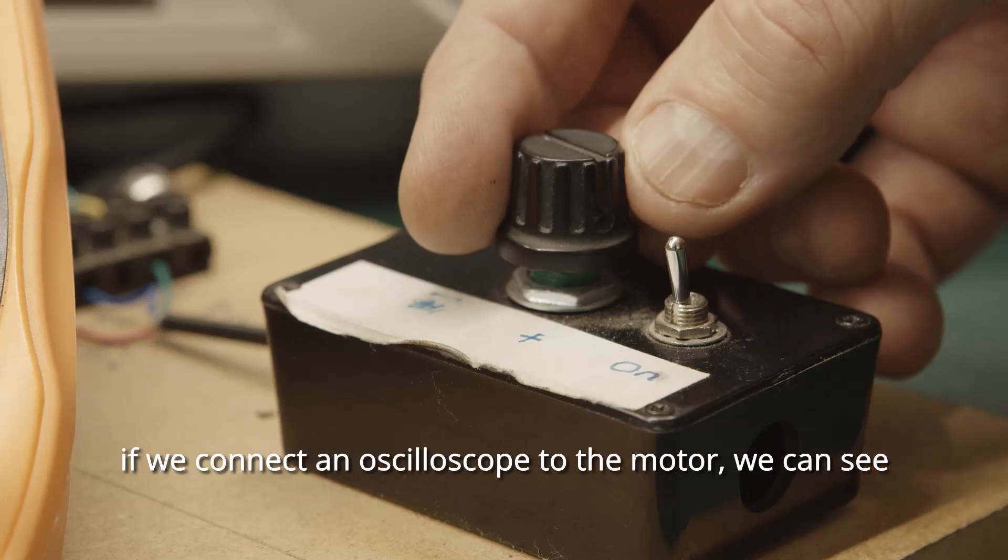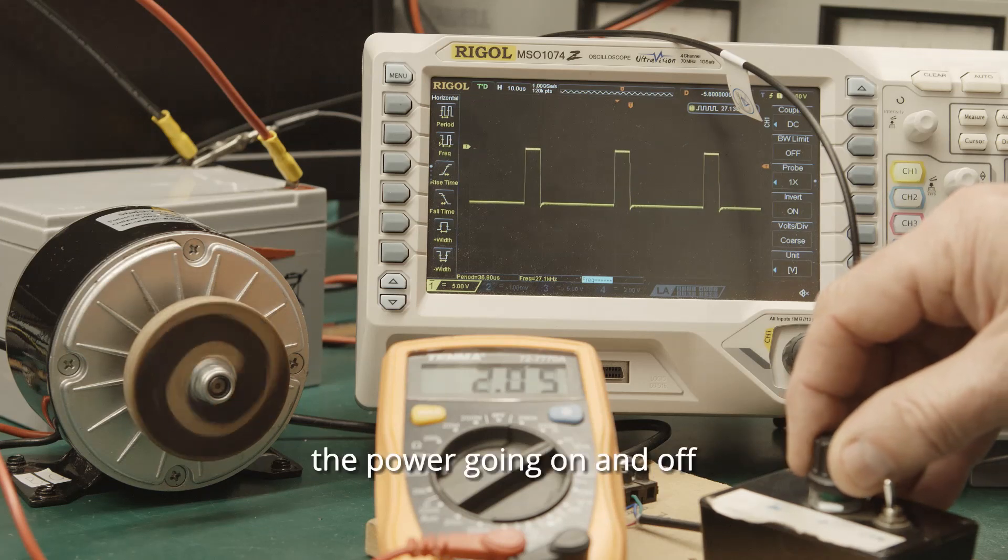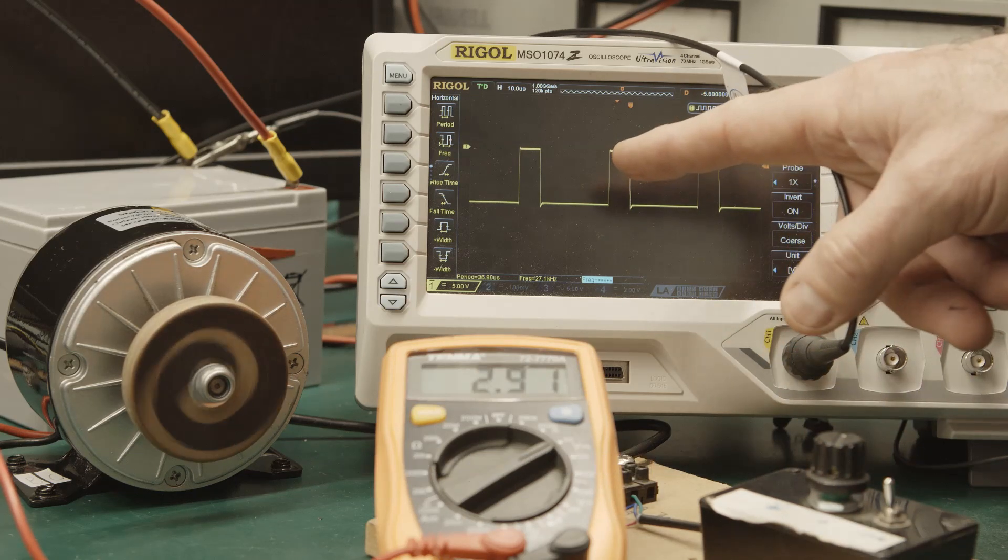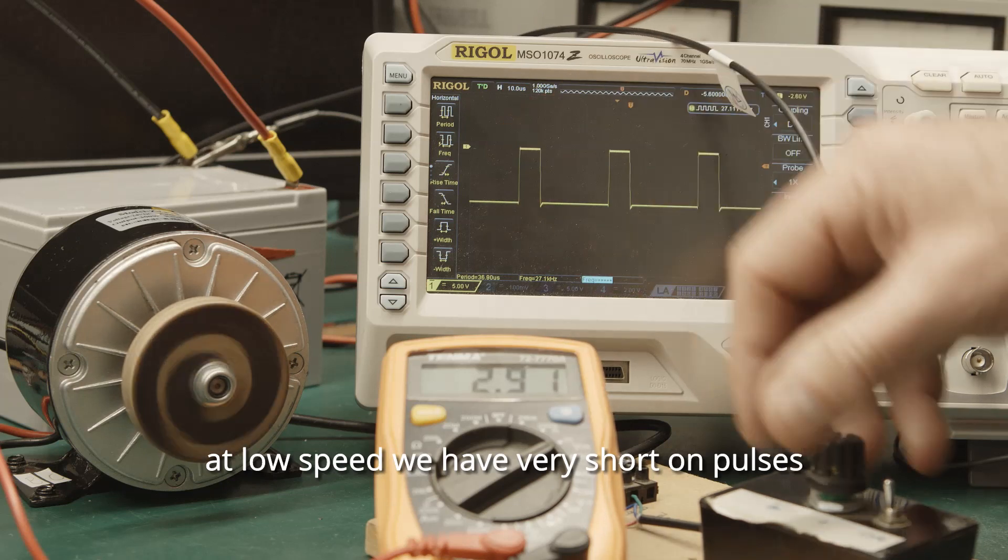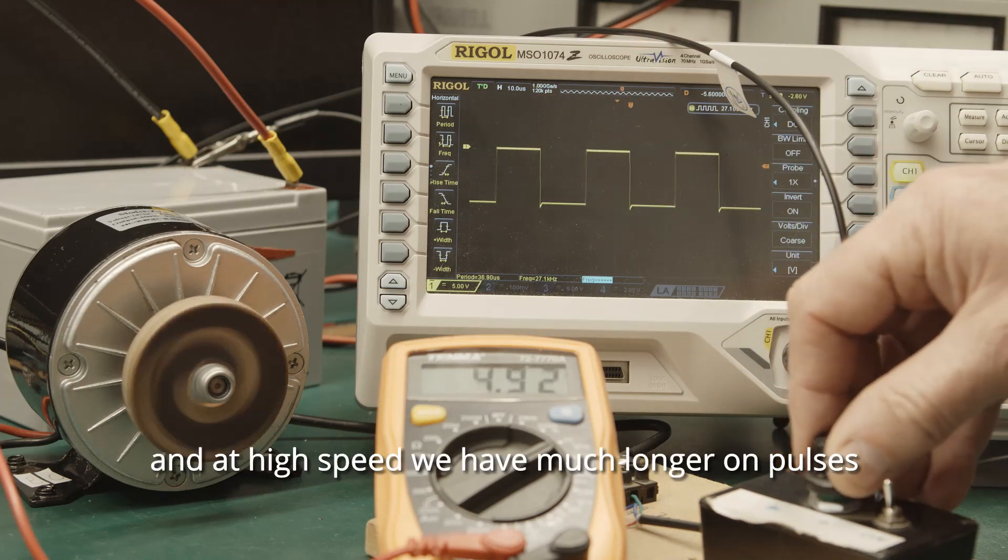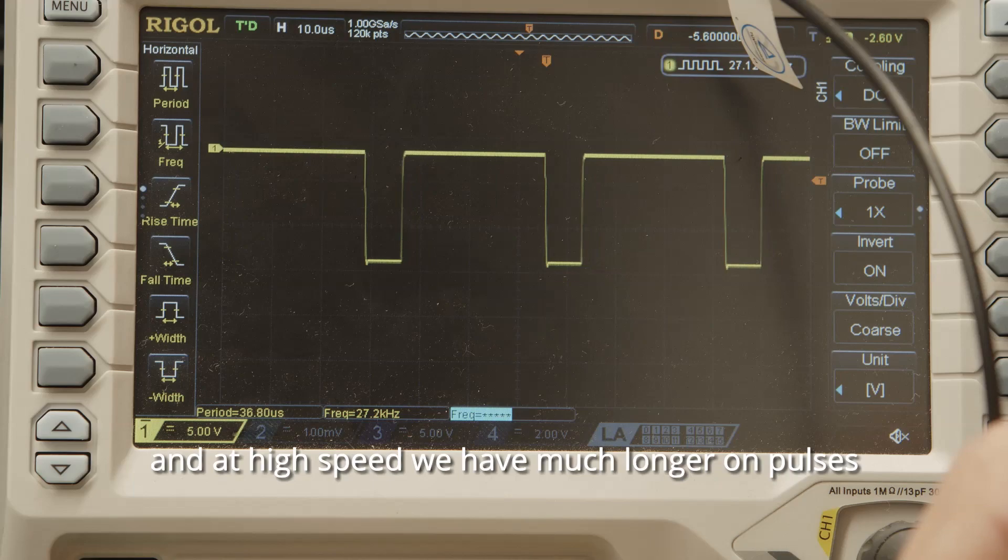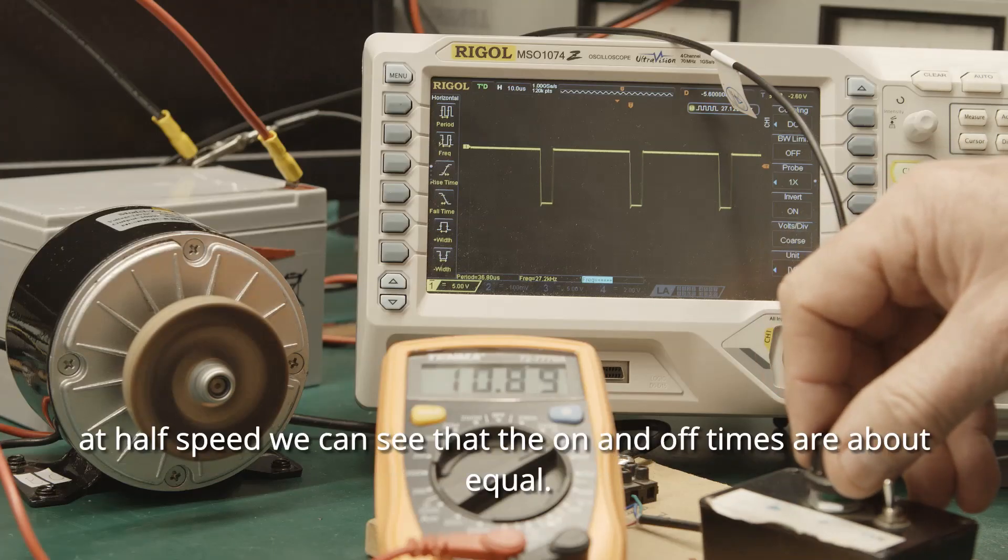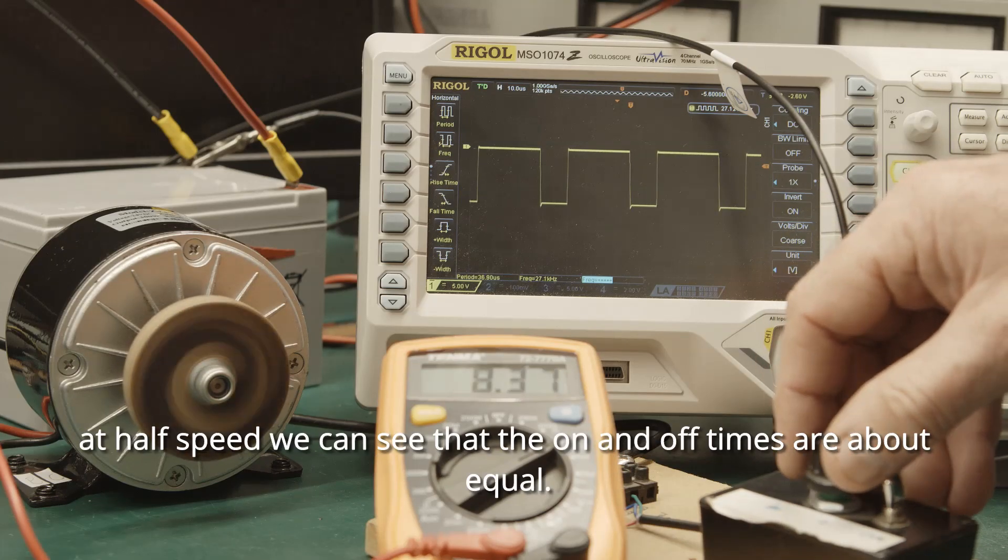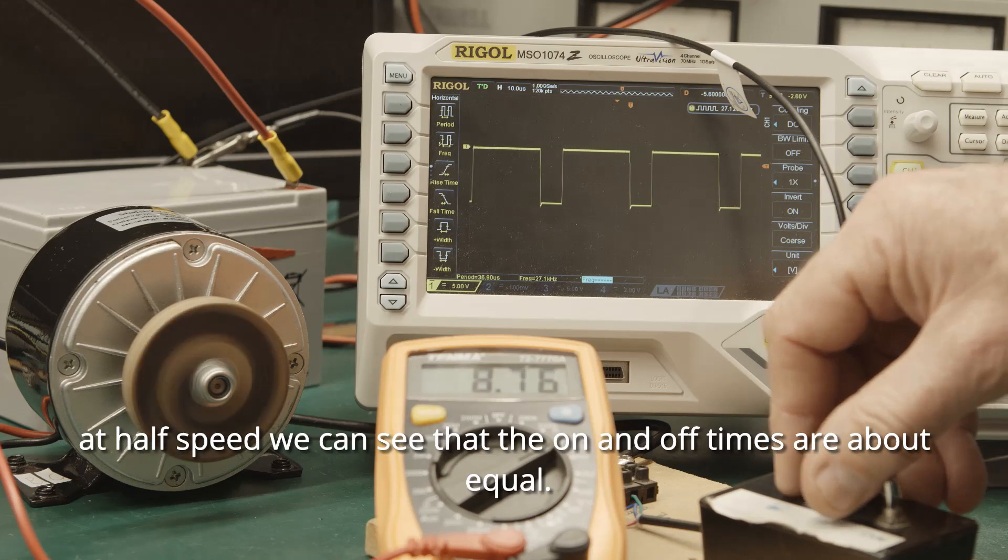If we connect an oscilloscope to the motor, we can see the power going on and off. At low speed, we have very short on pulses. At high speed, we have much longer on pulses. At half speed, we can see that the on and off times are about equal.